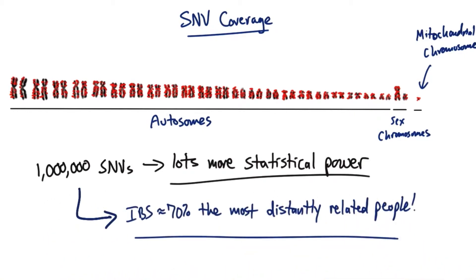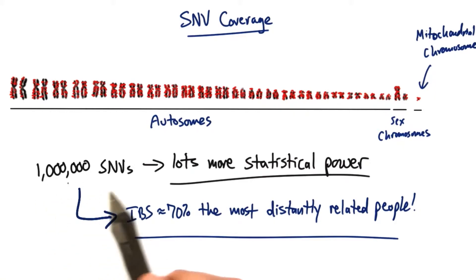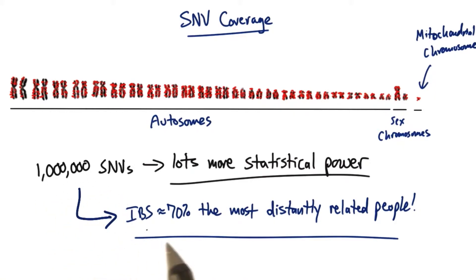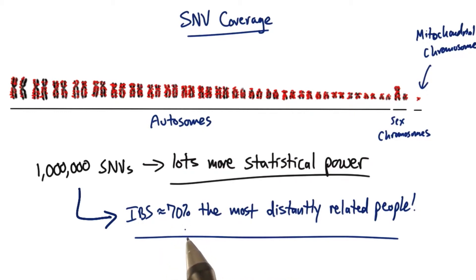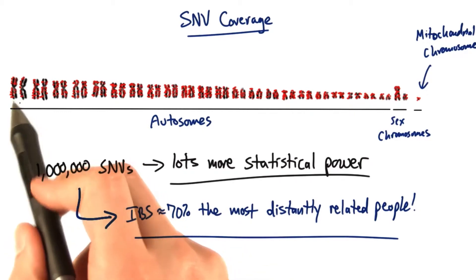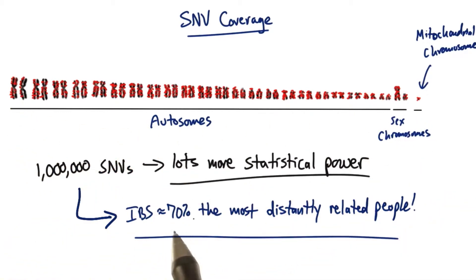You may be surprised to find that if we measure the IBS score over a million SNVs, the IBS score between you and the most distantly related person we could find around the world would still be about 70%. Even after looking at all these positions, 70% of them would be identical with the person you're most distantly related to.